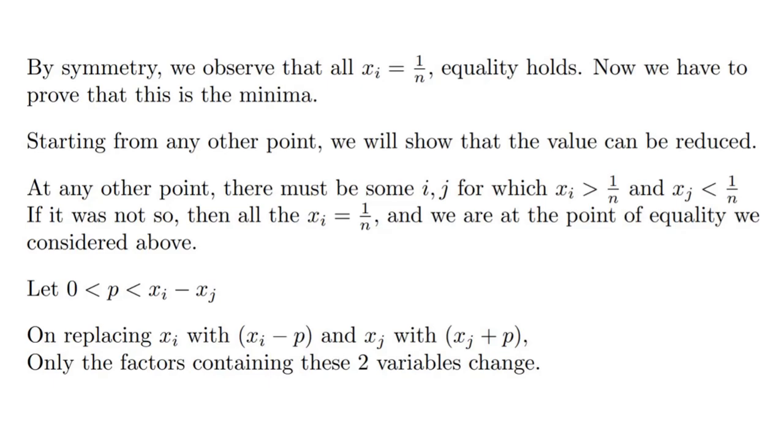Now before we proceed further, I'd like to speak about this choice of p. If we took p greater than x_i minus x_j, then x_i would become lower than x_j and x_j would become greater than x_i on doing this transformation. We need to ensure that the variables come closer to 1/n than they were before, because that is what we hypothesize—that 1/n is the minima.